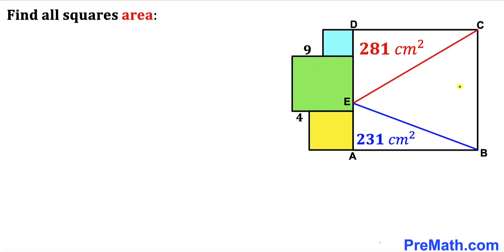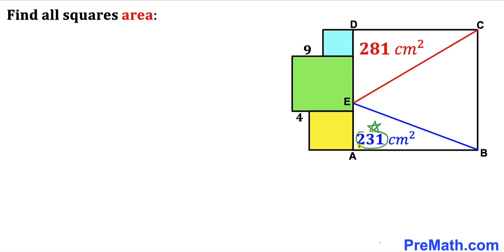Welcome to pre-math. In this video we have got square ABCD along with a blue square, green square, and yellow square as shown in the diagram, such that the area of right triangle CDE is 281 centimeter square, whereas the area of triangle EAB is 231 centimeter square. Our task is to calculate the area of the blue square, the green square, and the yellow square.